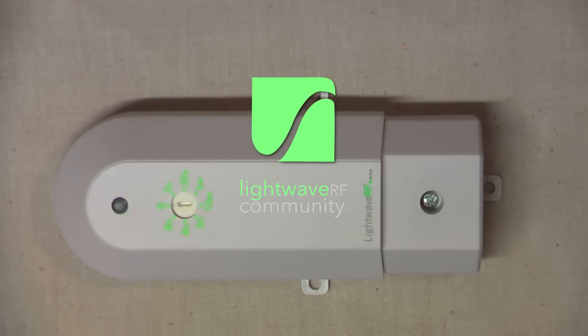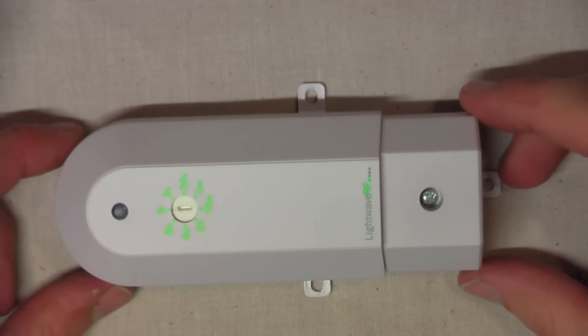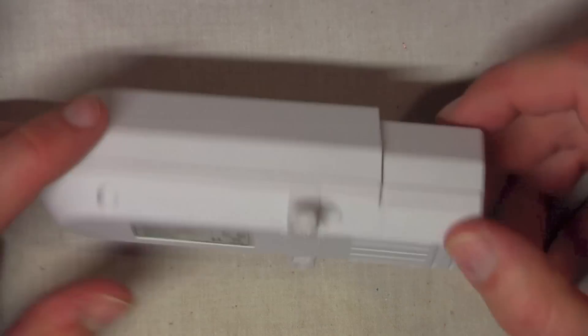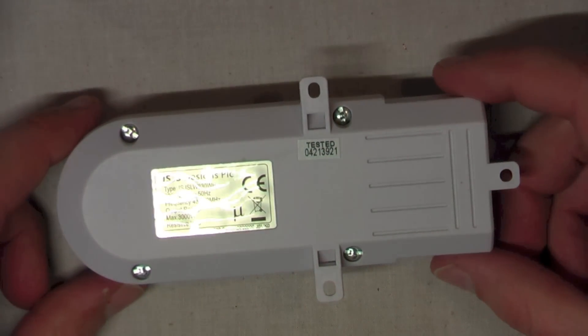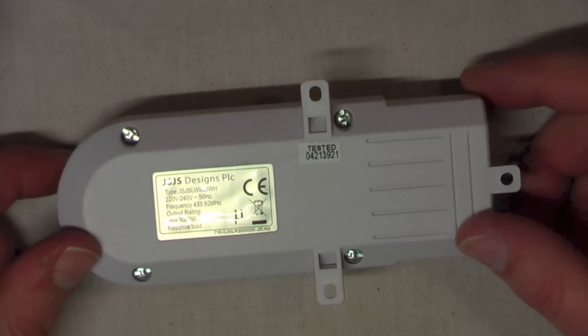Well good evening folks, this evening we're going to be looking at this device. This is the new Lightwave RF inline relay from JSJS Designs, part number JSJSLW830WH.